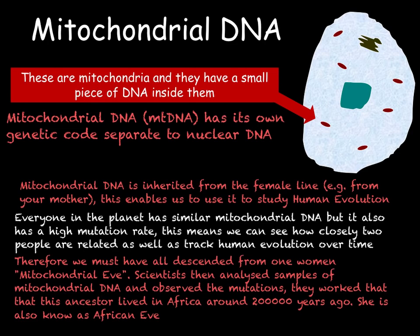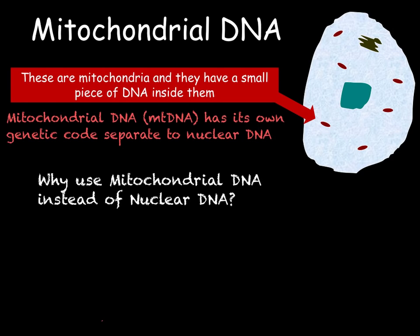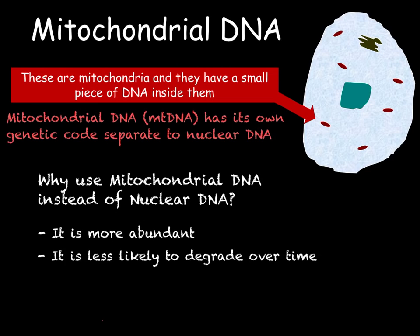It is important to note that just because we all descend from this one woman does not mean she was the only woman around at the time — it just means we can trace our lineage back to her. This discovery was quite groundbreaking as it provided evidence for the theory that humans originated in Africa, and also meant that Homo sapiens must have evolved in Africa and then spread out around the world. Mitochondrial DNA is used instead of nuclear DNA because we have lots of mitochondria in each cell, giving lots of copies of mitochondrial DNA, making it more likely to survive. It also does not degrade as quickly as nuclear DNA, and its high mutation rate means we can trace mutations over time and examine how closely related two members of the same species are.